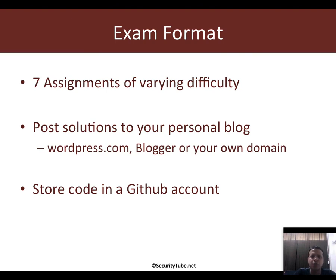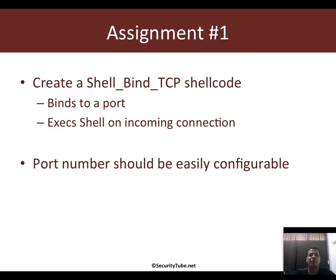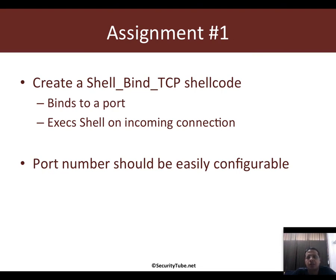Assignment one: create a Shell Bind TCP shellcode which binds to a port and executes a shell on an incoming connection. The port number should be easily configurable in your shellcode — you can either write a wrapper script that outputs your shellcode and takes in the port number, or you mark the specific byte inside the shellcode where the port number should be replaced.